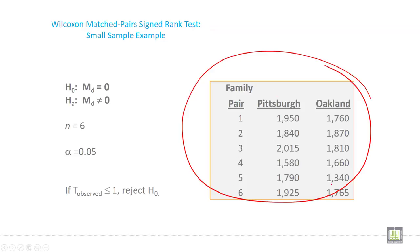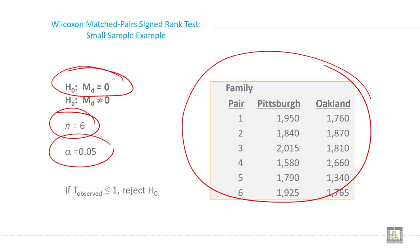What will be your alternate hypothesis? What will be your hypothesis? This is the null hypothesis: median equal to zero, and the alternate is median not equal to zero. Here n is equal to 6, and the type one error or significance level is given as alpha = 0.05.